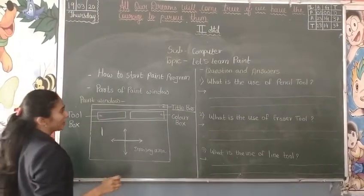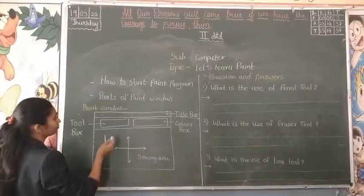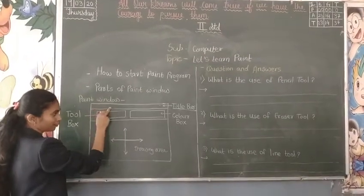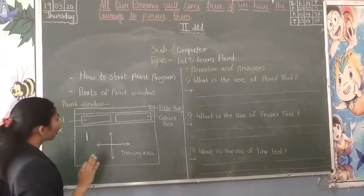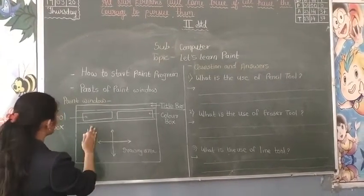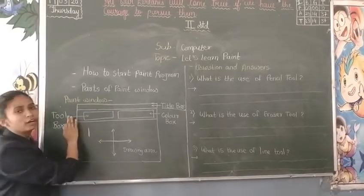The title bar contains the name of the current program and name of the file. Next, on the top left side of the paint window, there is a box called the toolbox.